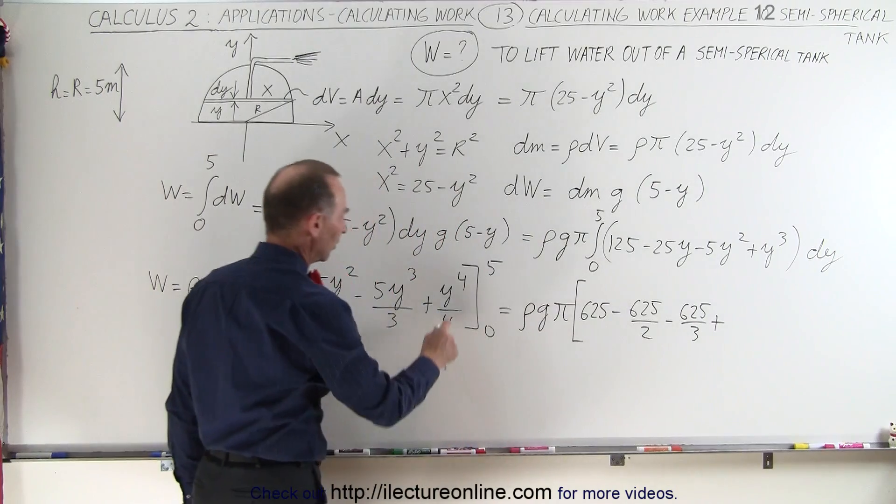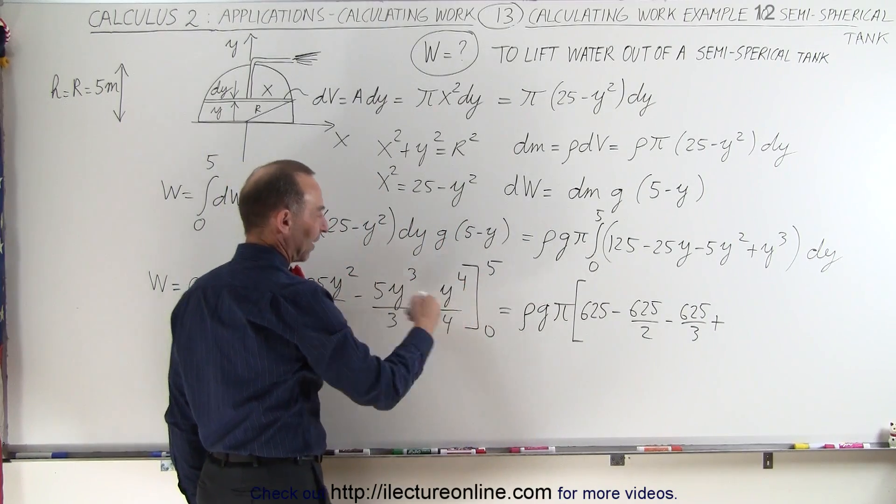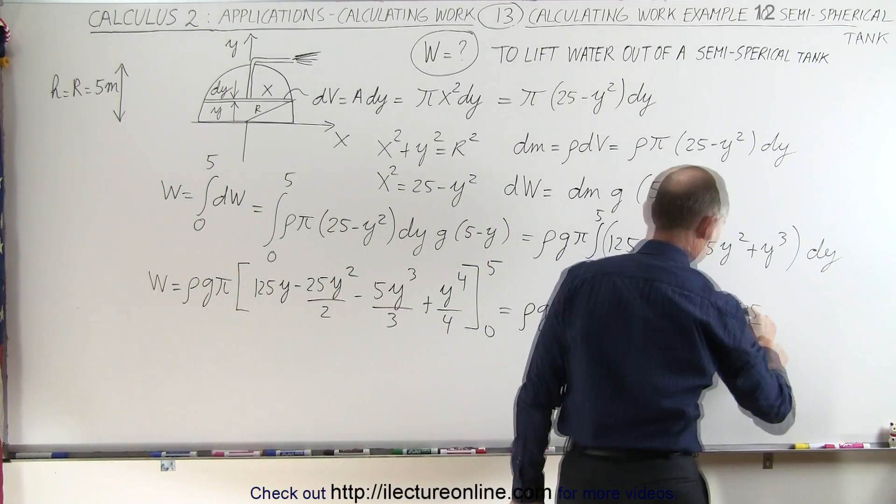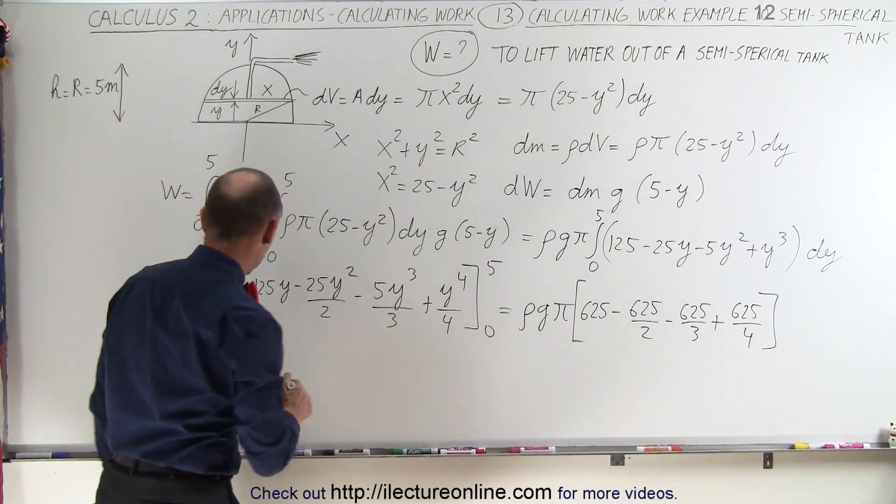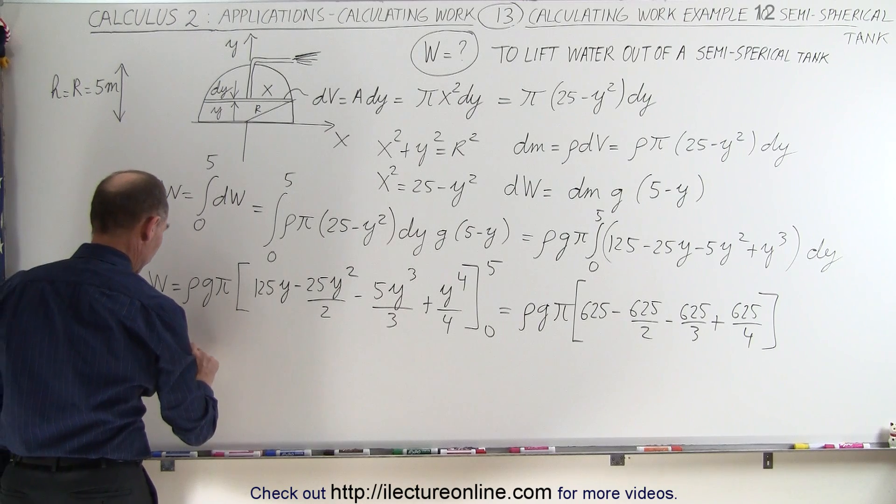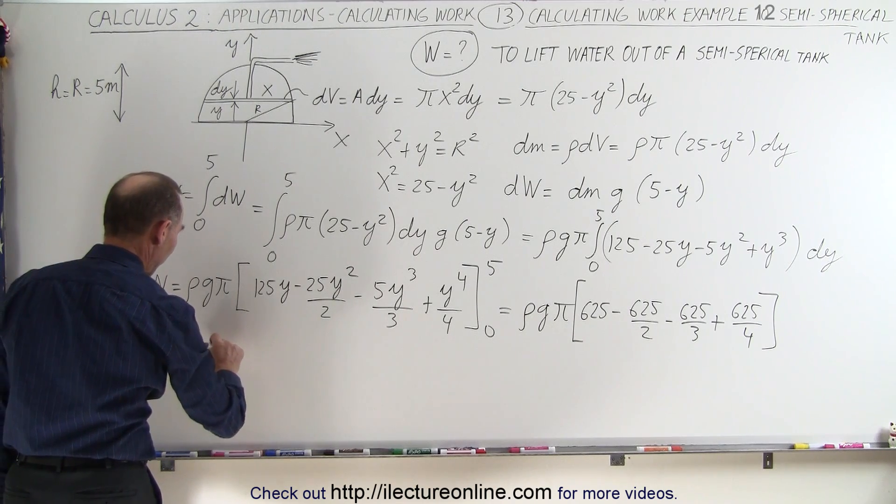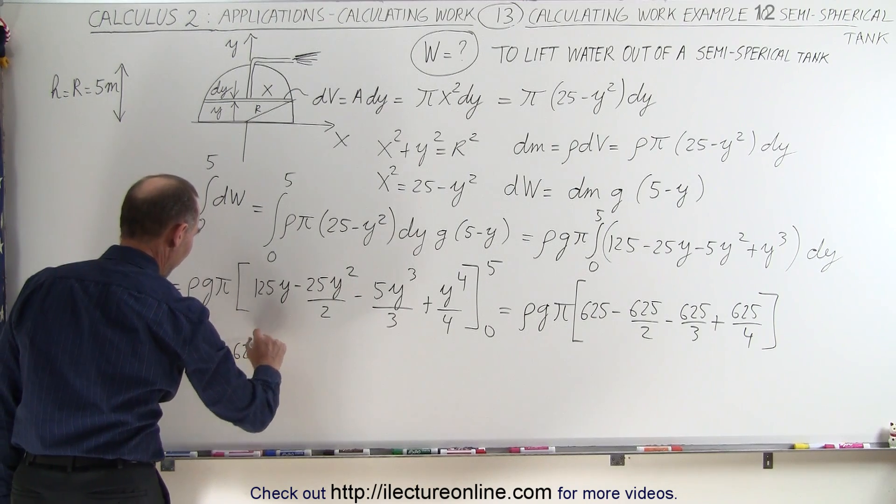And then plus the last term, 5⁴ is 625 divided by 4. So notice I can pull out a 625.